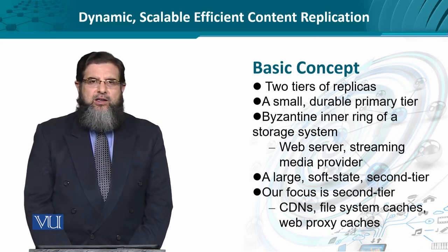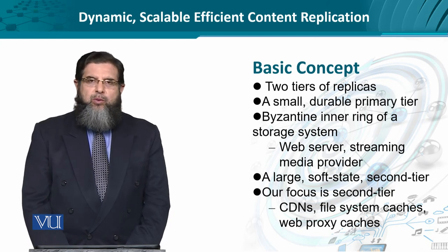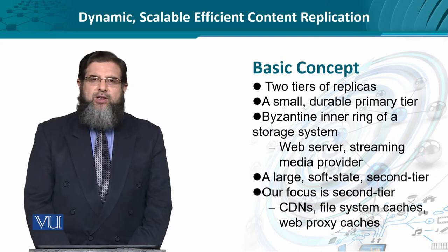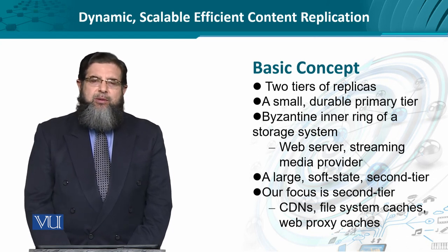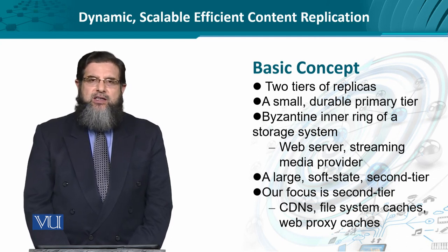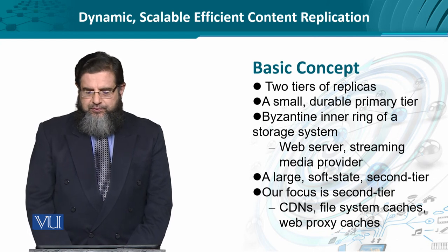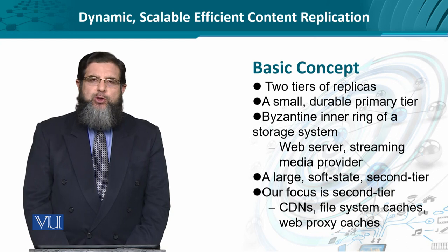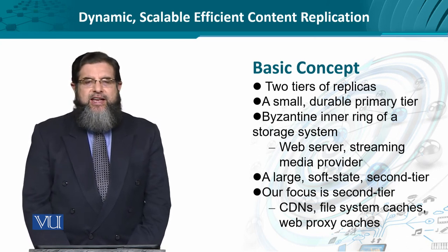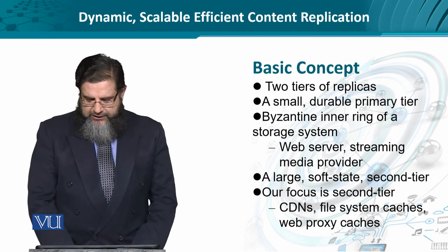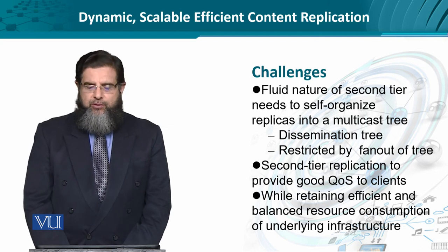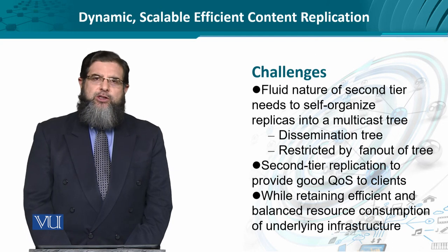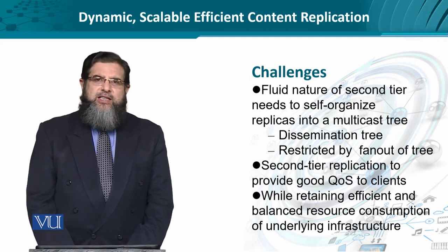Then we have an outwardly growing large network which is more of a soft-state-based second tier. Soft state basically means it's a timer-based content management mechanism. The content in the outer circle or outer tier is a replica that is temporarily stored there. CDN file system caches and proxy caches all fall into this category. Given this desired view of content distribution through replication and caching, what are the possible challenges we foresee?